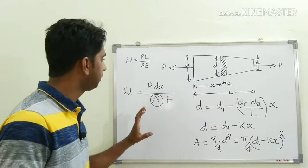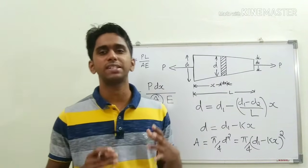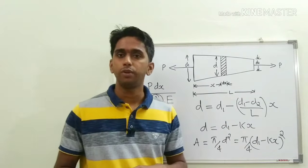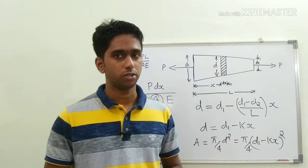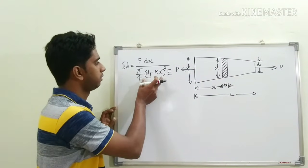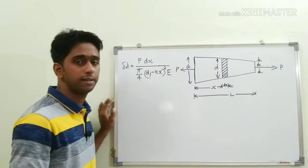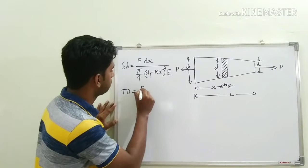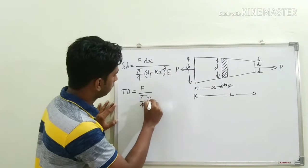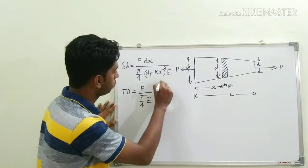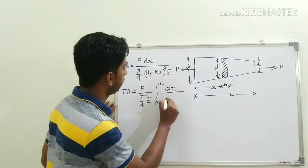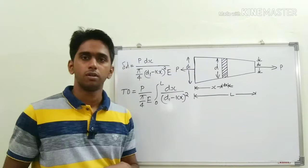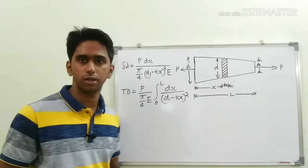Substituting the area, we get the deformation of the differential element. To extend this to the total length, we integrate between 0 and L. Taking constants outside: total deformation = (P / (π/4)E) × ∫₀ᴸ dx / (D1 − Kx)².